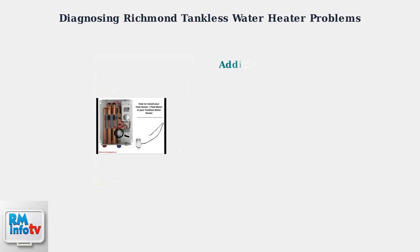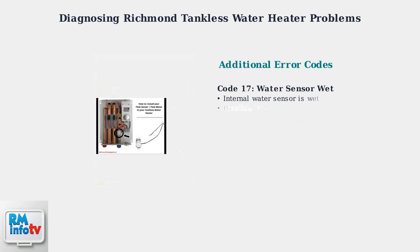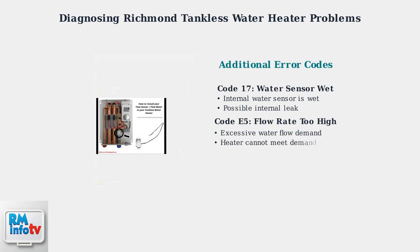Code 17 indicates the water sensor inside the unit is wet, suggesting a possible internal leak. Code E5 occurs when there's too much water flow and the heater cannot meet the demand.